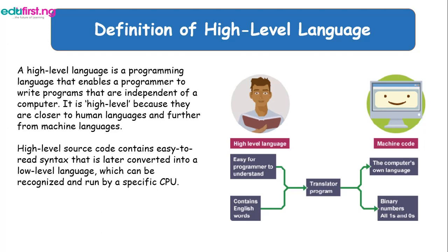With a high-level language, the source code contains easy-to-read syntax, but it is later converted into a low-level language that can be recognized and run by a specific CPU. That is to say, they contain letters or words that are readable by humans, which are later converted into machine code or machine language for the computer to understand.